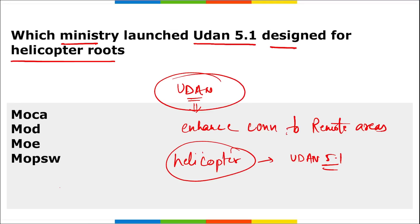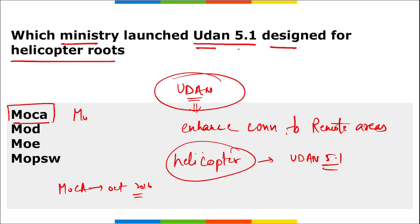Remember, the scheme will now allow routes where either the origin or destination is in a priority area. Earlier, both points had to be in the priority area. Ude Desh ka Aam Nagrik was launched by the Ministry of Civil Aviation in October 2016 — it is a regional connectivity scheme. The correct answer is Ministry of Civil Aviation.